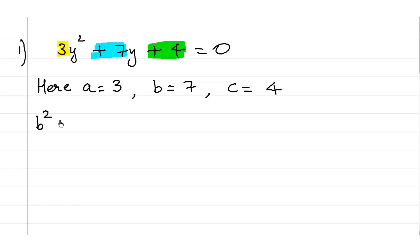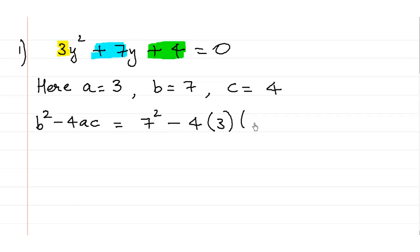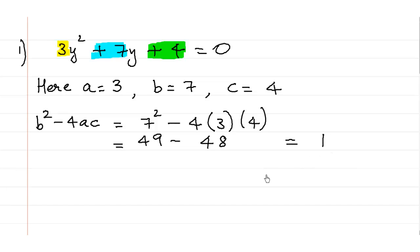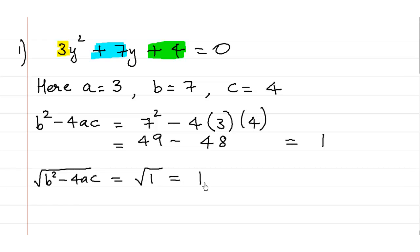Now, first of all let's find what is b² - 4ac. So, 7² — the value of b is 7 — minus 4 into a into c, putting in the values: 7's are 49, minus 4, 3's are 12, 12 4's are 48. So we get b² - 4ac as 49 - 48, which is 1. The square root of 1 is simply 1.